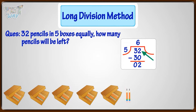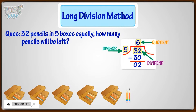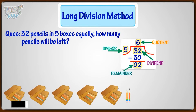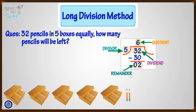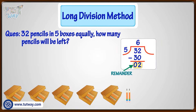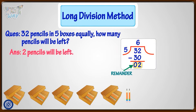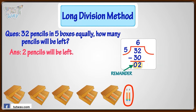Where 32 is our dividend, divisor is 5, and quotient is 6 — that is, each box will contain 6 pencils. Remainder is 2, that is, 2 pencils will be left. What we need here is the remainder, which is 2. So, there will be 2 pencils left after division.